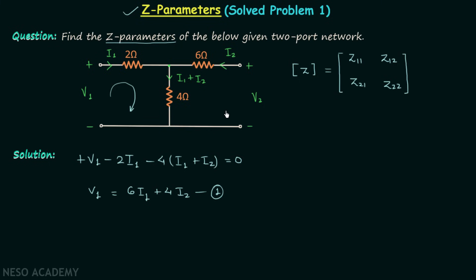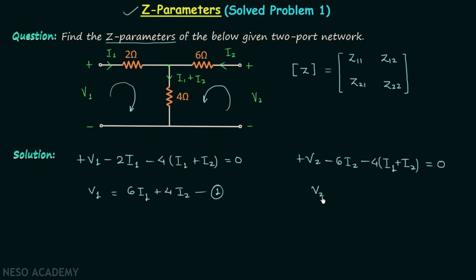Now we develop the output KVL equation. We have V2 minus 6I2 minus 4(I1 + I2) = 0. From here we get V2 equal to 4I1 plus 10I2. Let's call this equation number two.